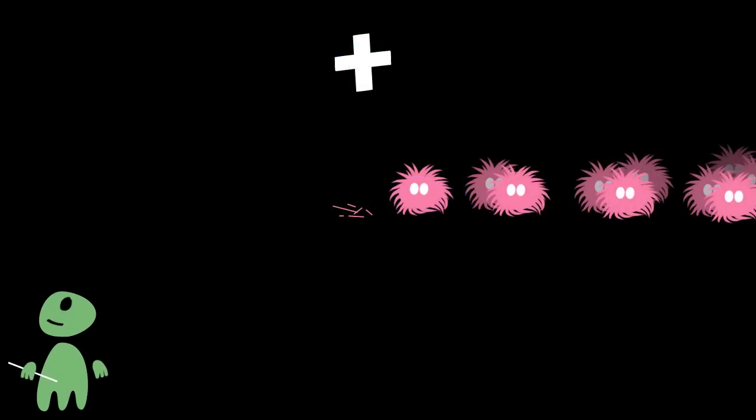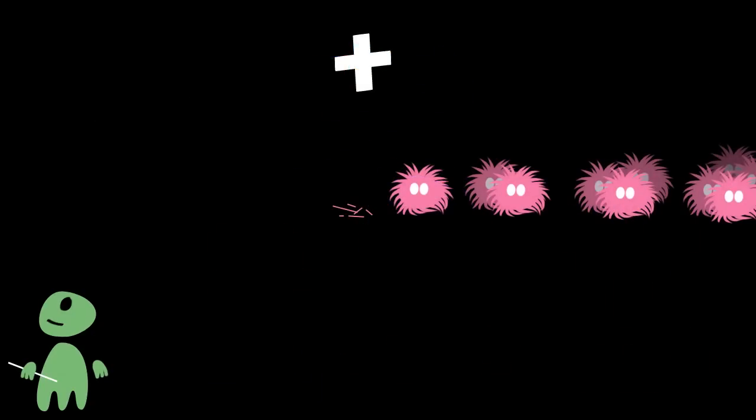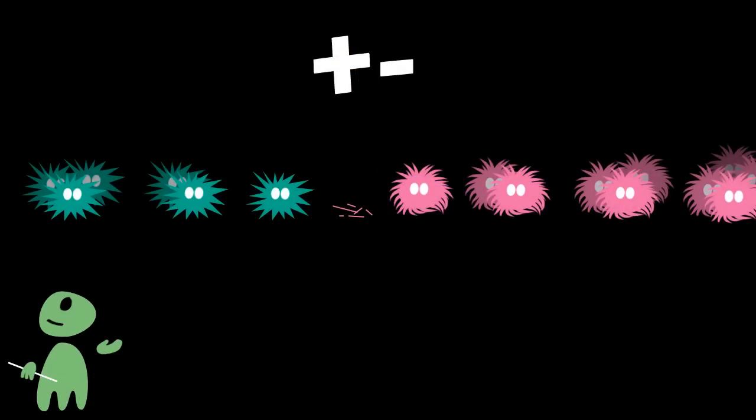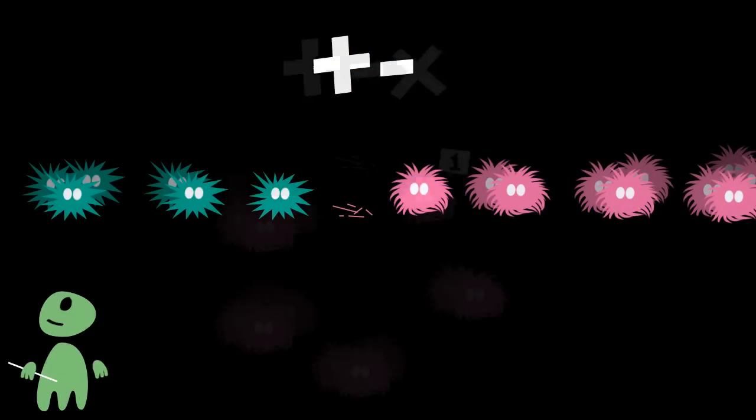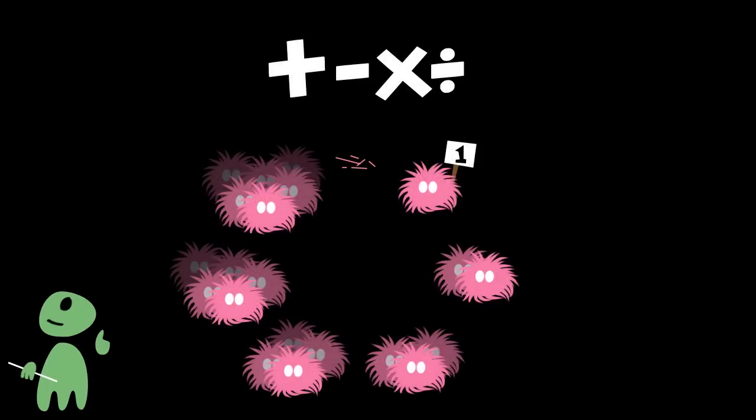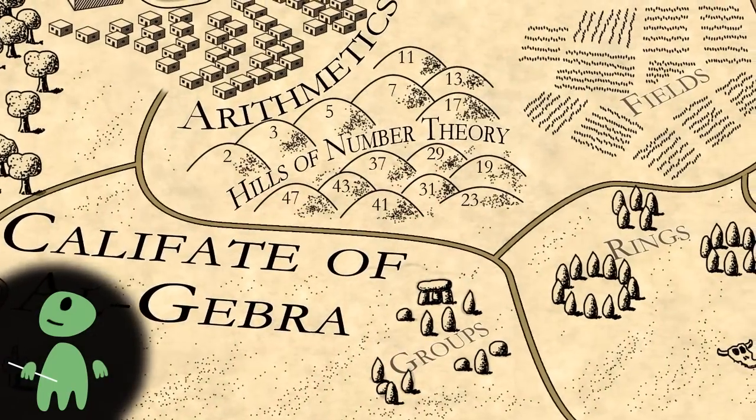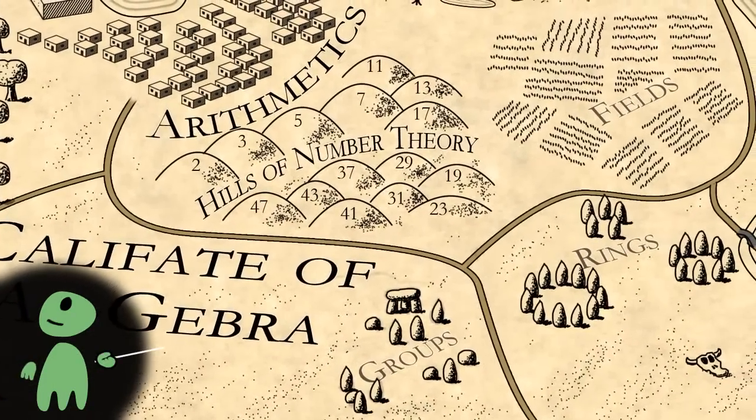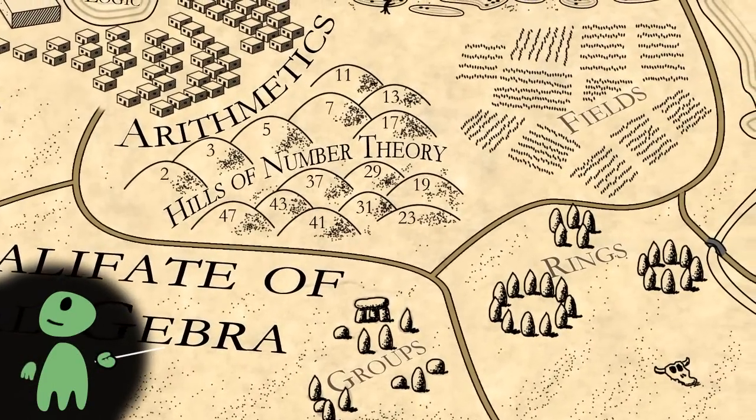Roughly speaking, when you generalize the rules for addition, you get semi-groups. When you include subtraction, you get groups. When you allow multiplication, you get rings. And when you make sure you can divide, you get fields. This belongs all to the domain of algebra. In a certain manner, algebra is all about manipulating symbols.